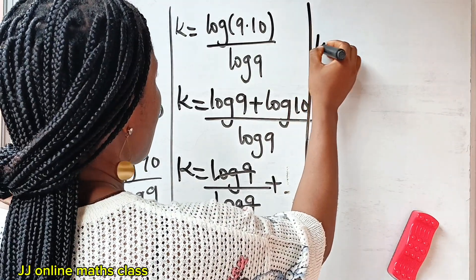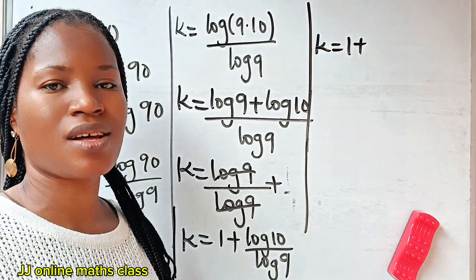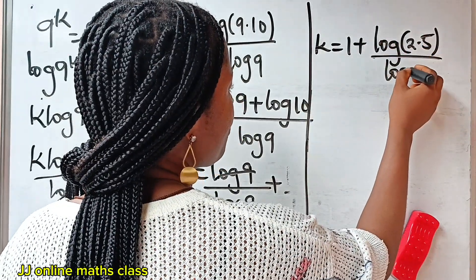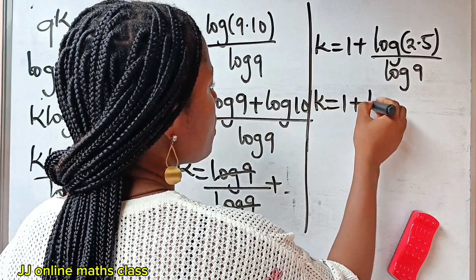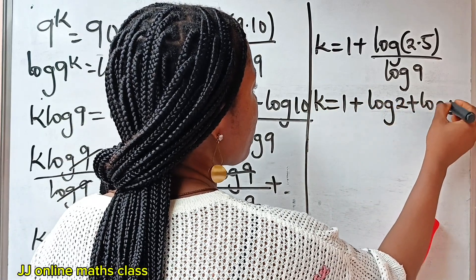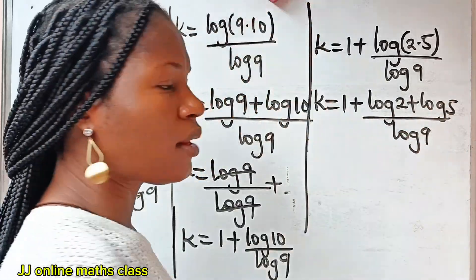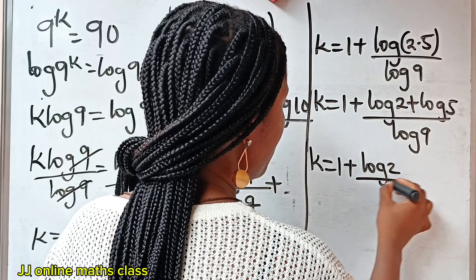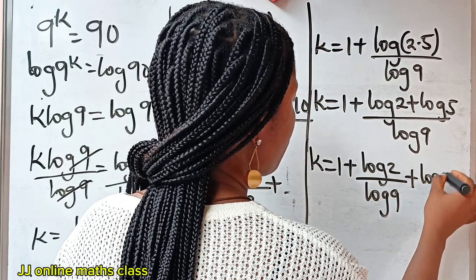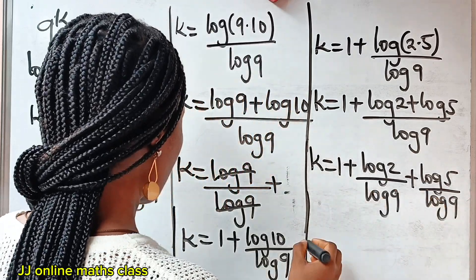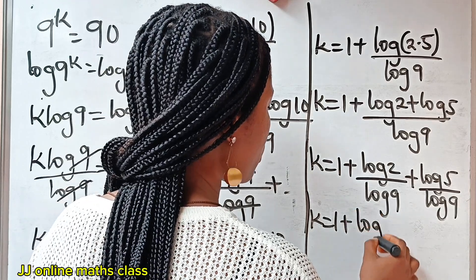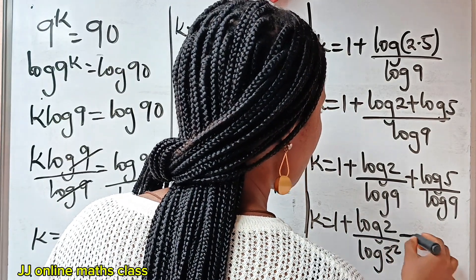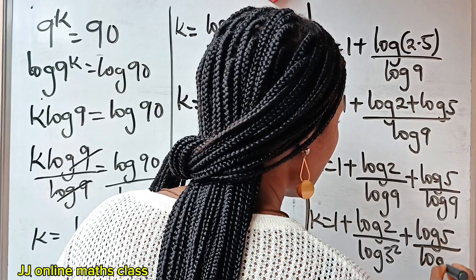So we have K is equal to 1 plus — now 10 can be expressed as 2 multiplied by 5. So we have log of 2 multiplied by 5, divided by log 9. This gives us log 2 plus log 5, everything divided by log 9. Now we are going to distribute the denominator, so we have K is equal to 1 plus log 2 divided by log 9 plus log 5 divided by log 9. And since 9 equals 3 squared, we can write log 9 as log 3 squared.